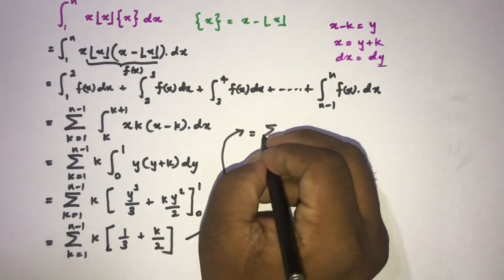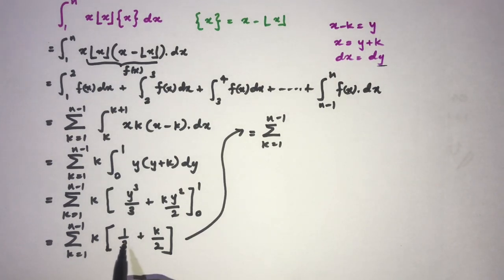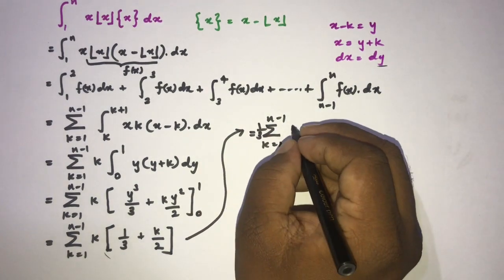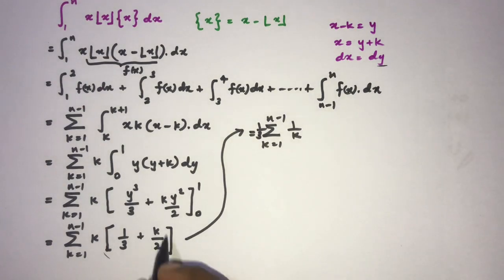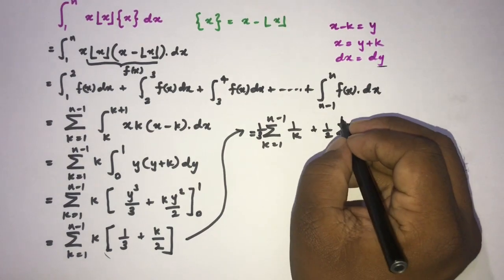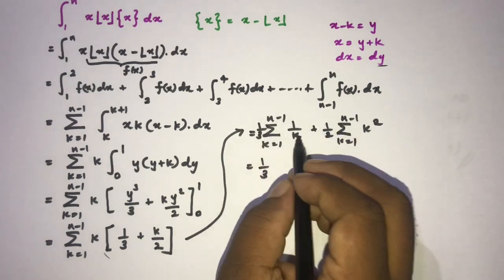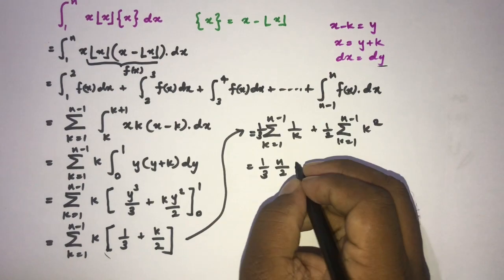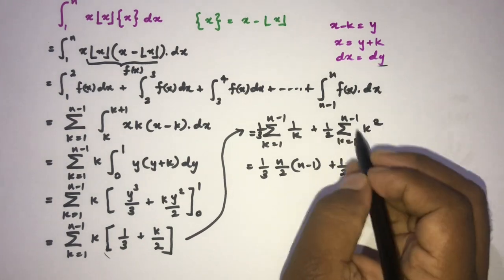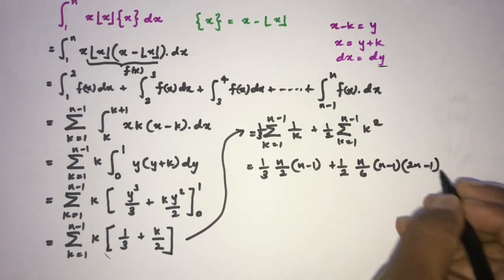This equals the sum from k equals 1 to n minus 1 of (k/3 plus k²/2). We can separate this as (1/3) times the sum of k from 1 to n minus 1, plus (1/2) times the sum of k² from 1 to n minus 1. Applying the standard sum formulas, this becomes (1/3)·[n(n-1)/2] plus (1/2)·[n(n-1)(2n-1)/6].